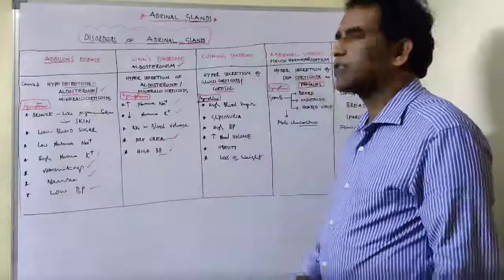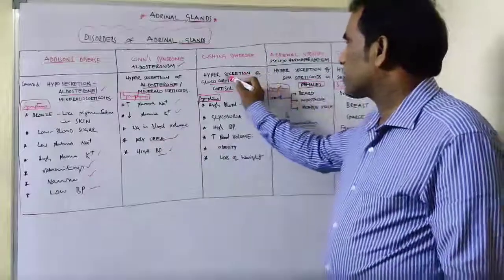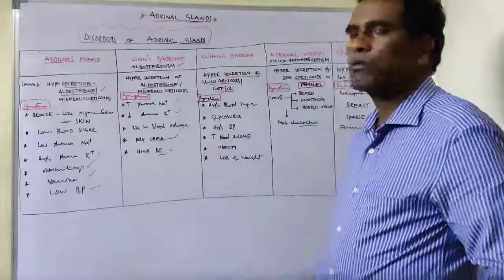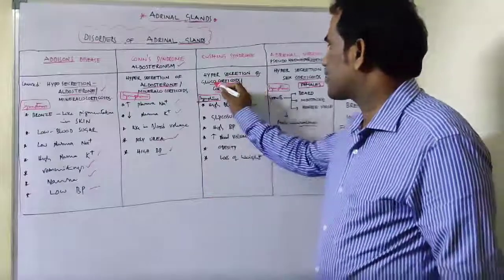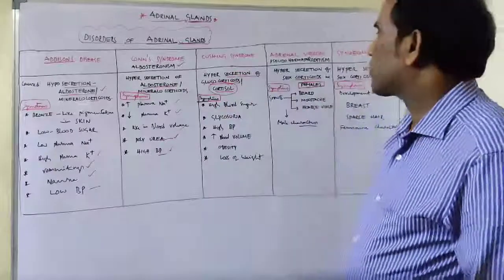Now coming to Cushing syndrome. Cushing syndrome is caused by hypersecretion of glucocorticoids, that means cortisone or cortisol, excessive secretion of cortisol or glucocorticoids.